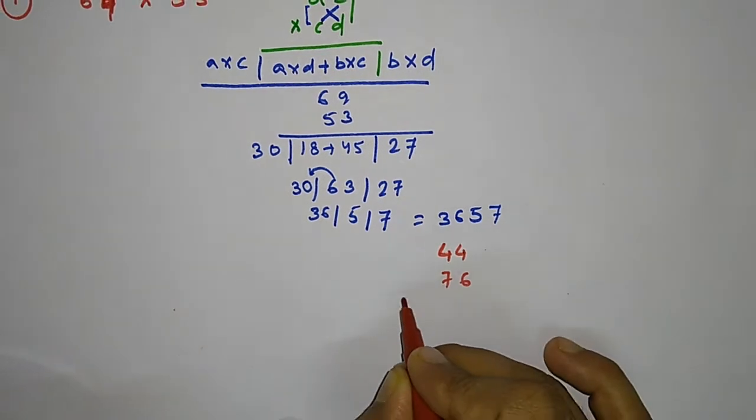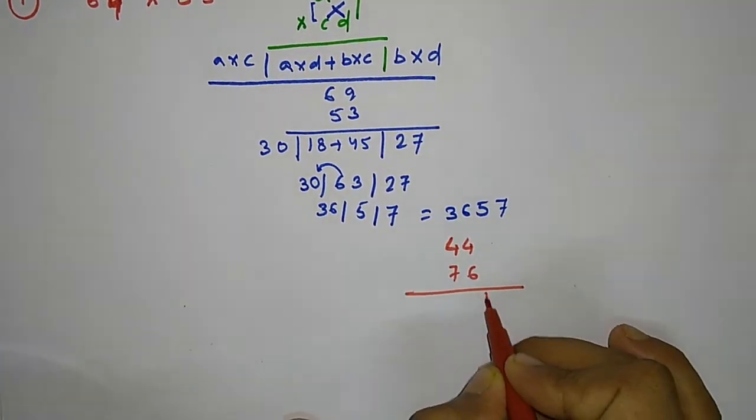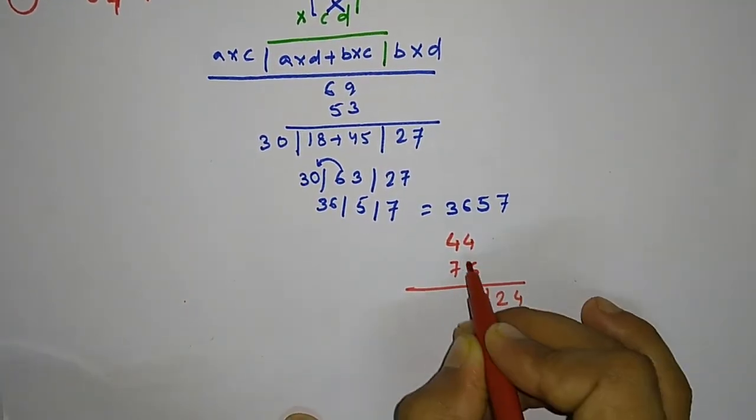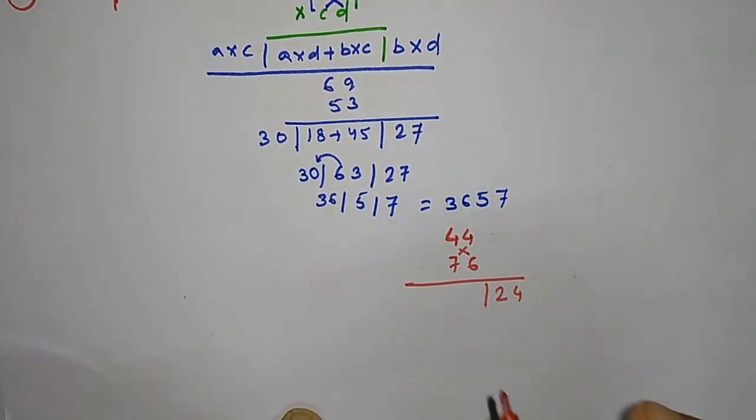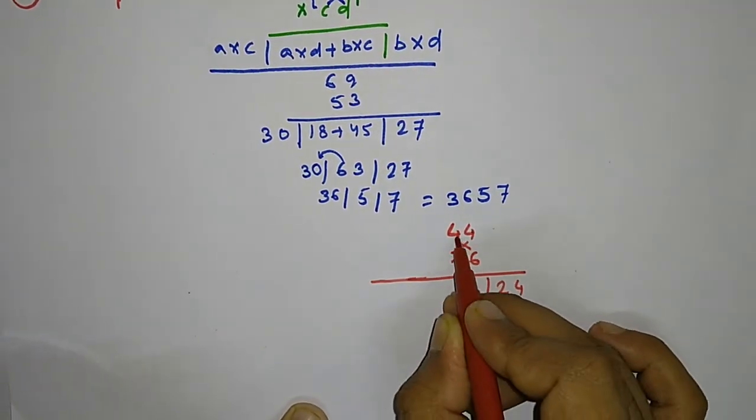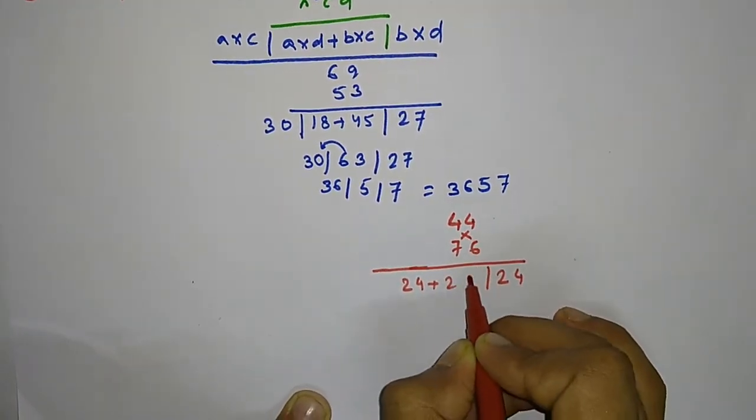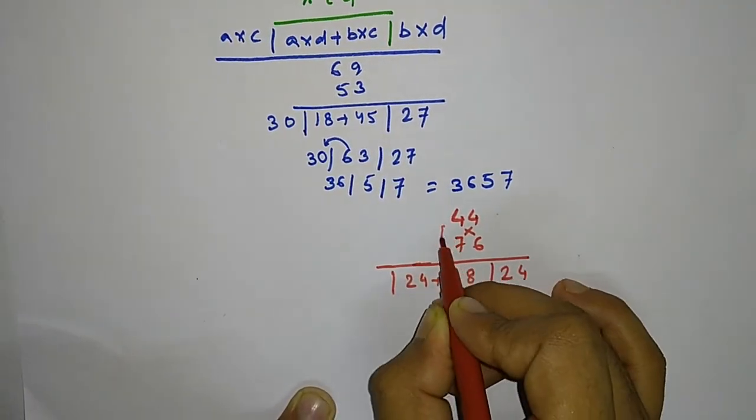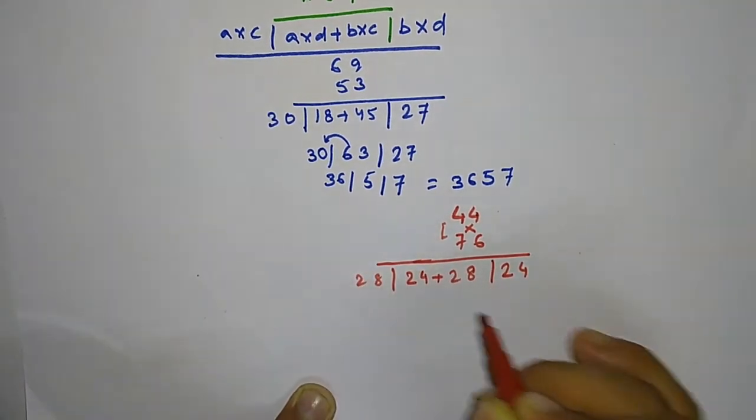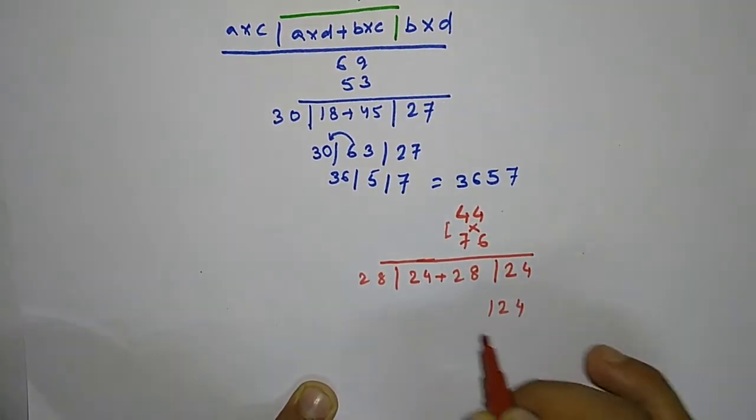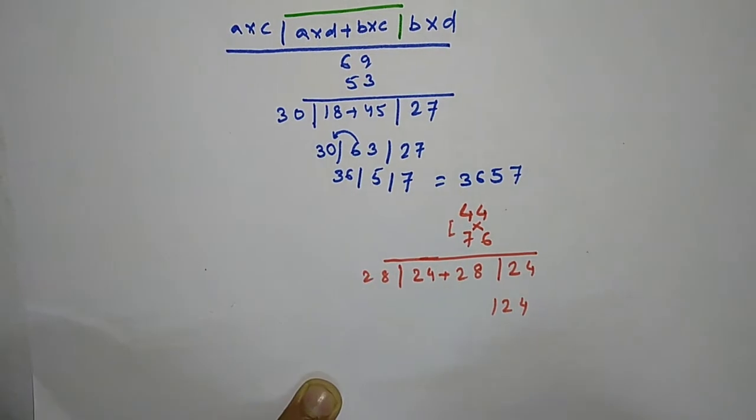Let me give you one more example: 44 into 76. So 4 times 6 equals 24, then you are going to cross multiply and add. So 4 times 6 equals 24 plus 4 times 7 equals 28, and 4 times 7 equals 28. So this will be 24, 28, and 24, which will be 52, and this is 28.